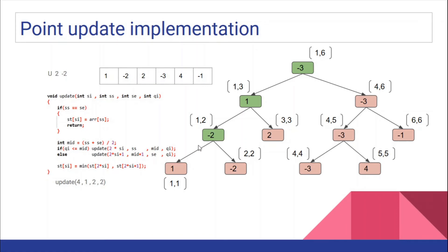We return to the root SI=1 (range [1,6]), which takes minimum of its left child (-2) and right child (-3) = -3. So the root remains -3, and nothing changes there. We return to the main function. This is how a point update propagates up the segment tree, updating only O(log n) nodes.